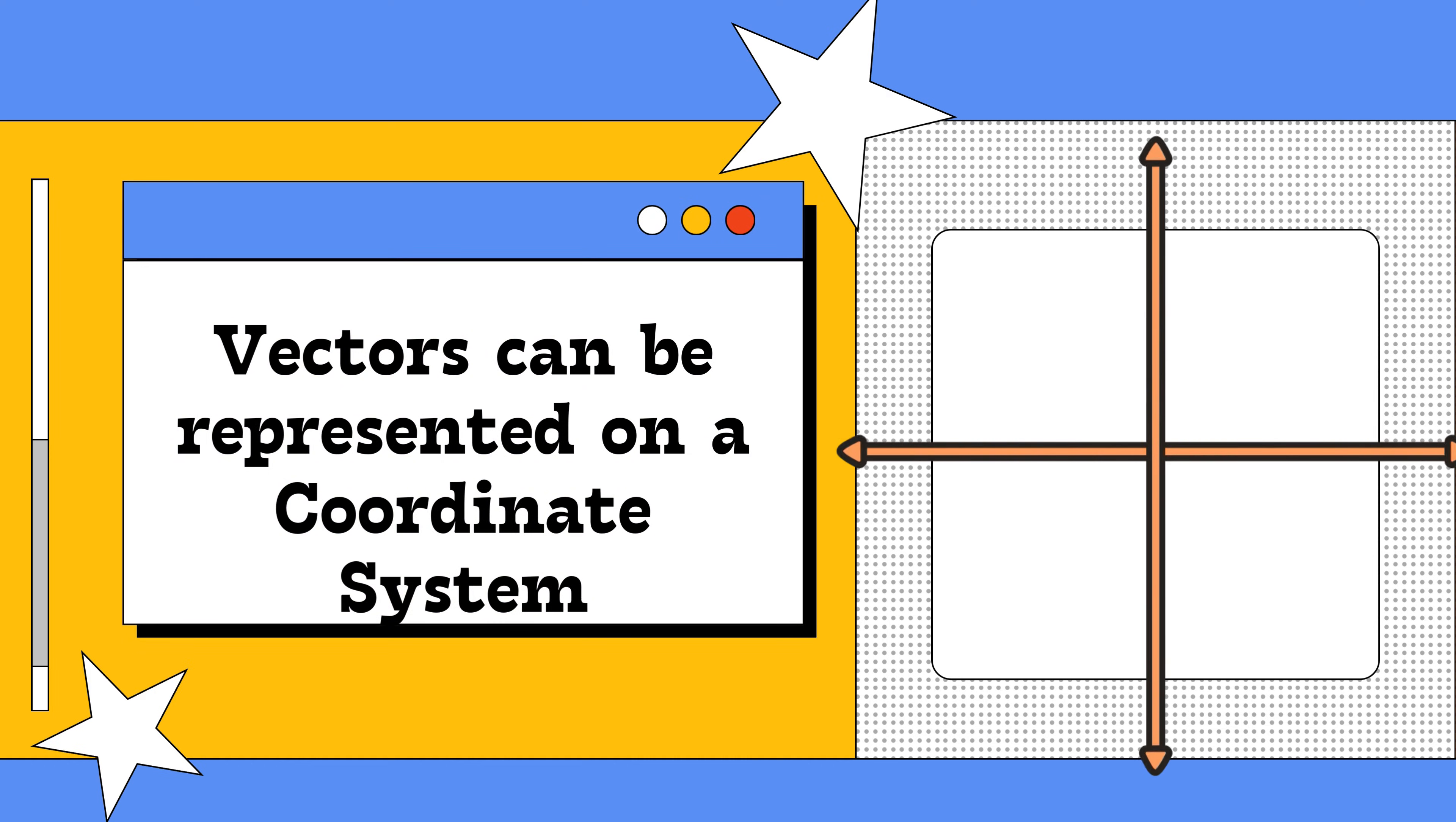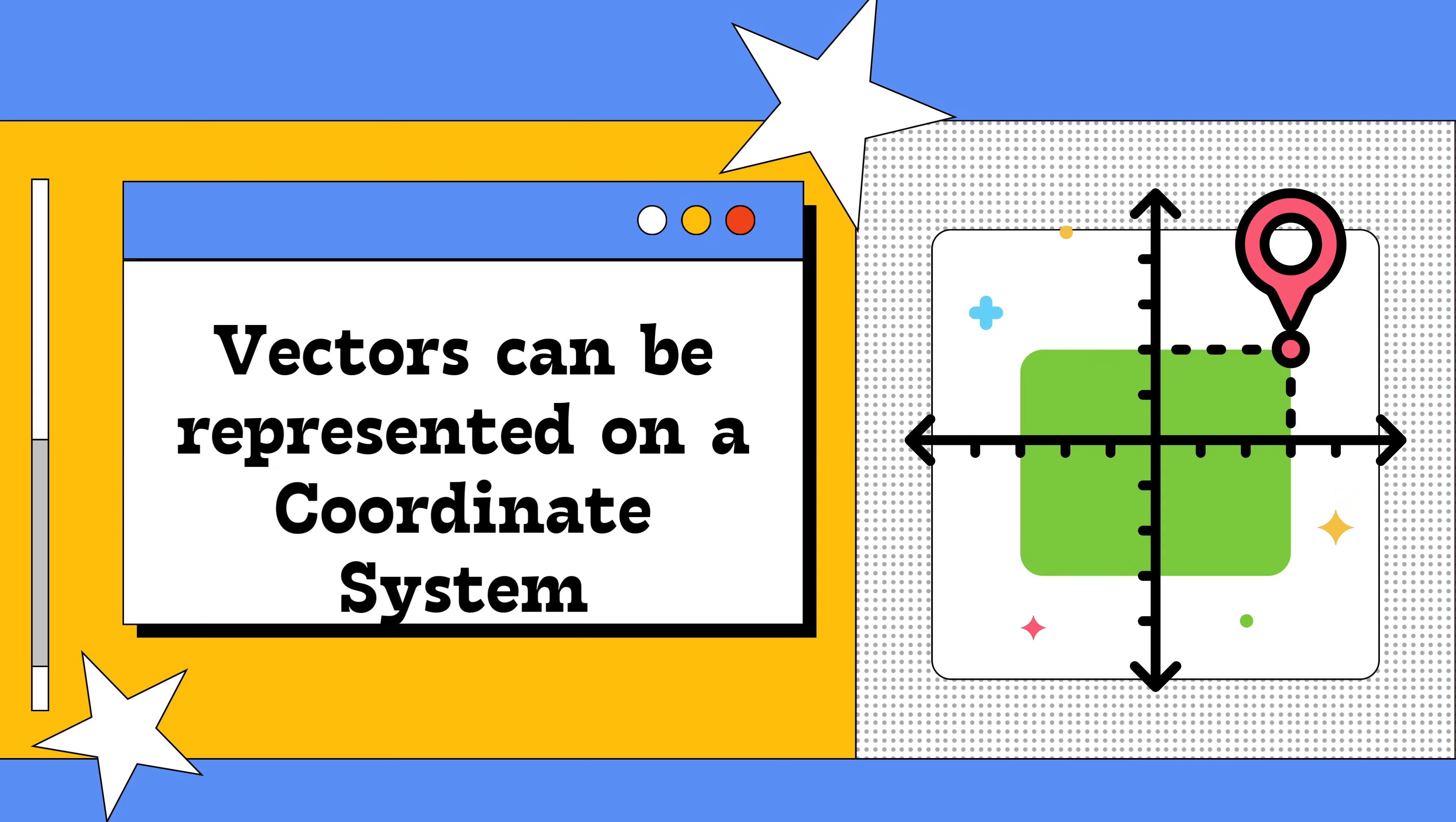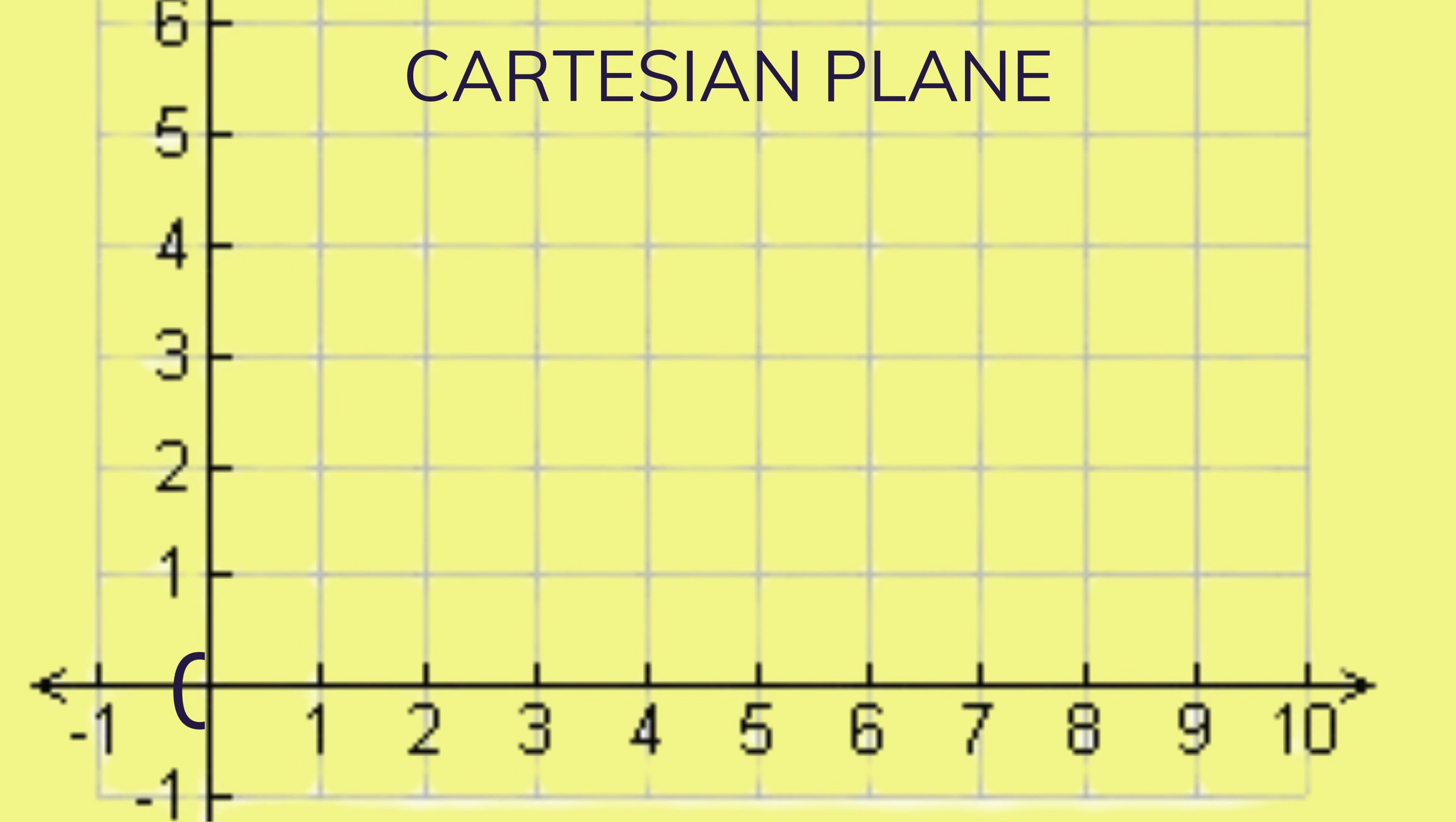Vectors can be represented on a coordinate system. In the case of two-dimensional vectors, we can use the Cartesian plane to show a visual representation of how vectors operate. The Cartesian plane consists of a horizontal line called the x-axis and a vertical line called the y-axis. These lines are calibrated in the same way a number line is divided. We have zero in the centre for both lines. Each axis is uniformly numbered according to the distance between them.